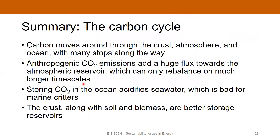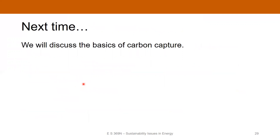To summarize the carbon cycle: carbon moves around through the crust, atmosphere, and ocean with a lot of stops along the way. Our anthropogenic activities have added a large flux of CO2 toward the atmospheric reservoir, and natural processes can only rebalance this on much longer timescales. Storing CO2 in the ocean acidifies seawater, which is bad for marine organisms. We have tremendous storage potential in the crust along with soil and biomass, and these represent potential targets moving forward. Next time we'll get into the basics of carbon capture and talk about how we can prevent CO2 from getting into the atmosphere in the first place, or try to capture what's already there. Thanks for listening and I'll see you in the next one.